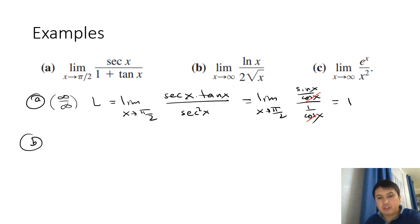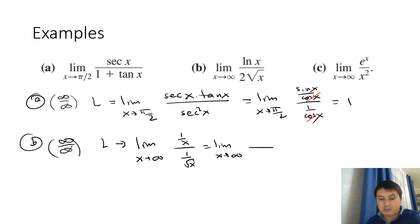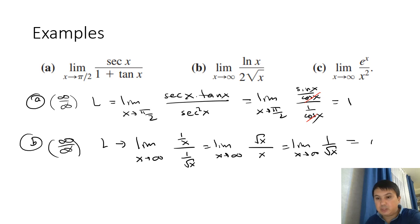Example B: lim x→∞ of ln(x)/(2√x). Both go to infinity, so it's ∞/∞. Applying L'Hôpital: derivative of ln x is 1/x; derivative of 2√x is 1/√x. Dividing 1/x by 1/√x gives √x/x = 1/√x. As x→∞, 1/√x → 0. So the limit is 0.